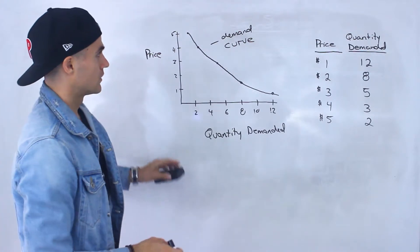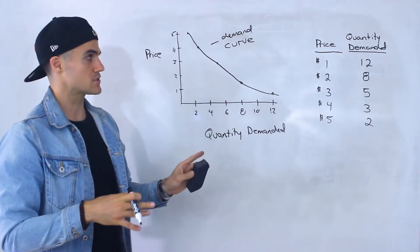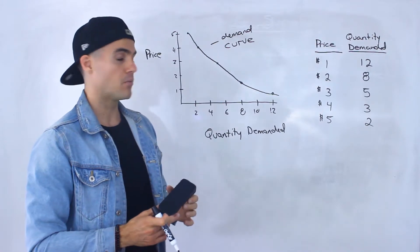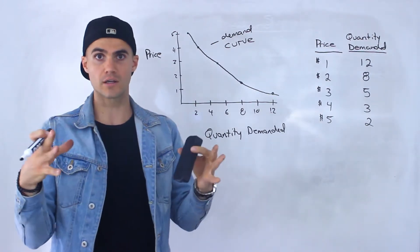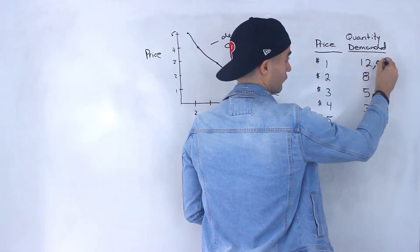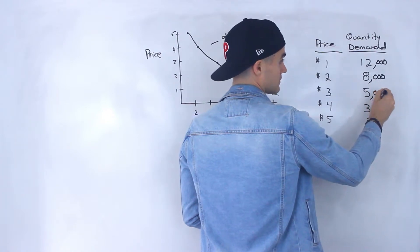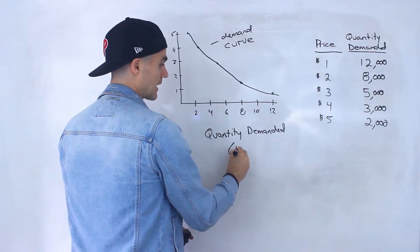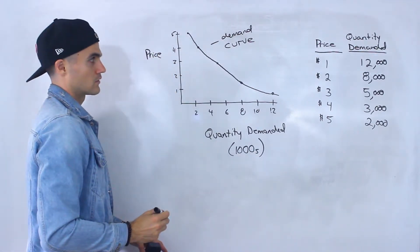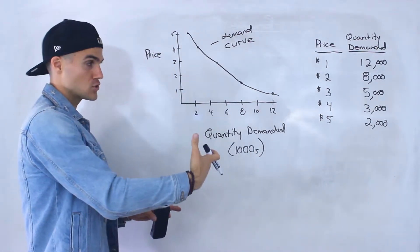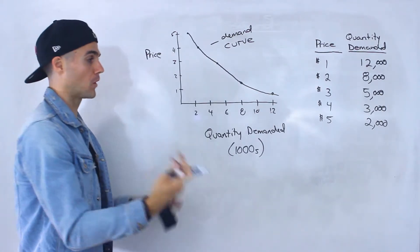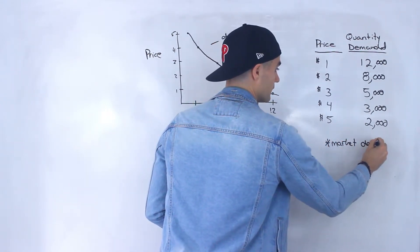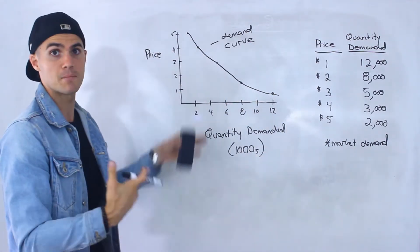We can look at the demand curve on different scales. This example was from the perspective of one consumer, but what if we were looking at a whole market? Instead of 12, this might be 12,000; instead of 8, it might be 8,000; and so on. So you could look at a group of consumers — the quantity demanded could be in thousands. You could be looking at one consumer or a bunch of consumers in a whole market, and that would be called the market demand curve.